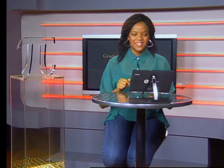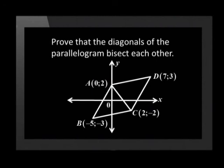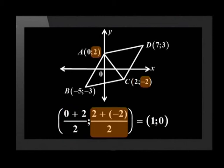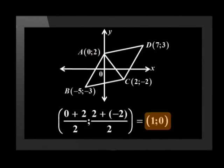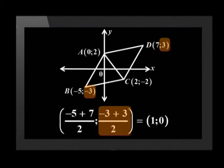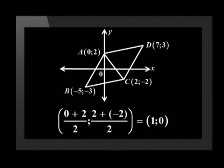Let's do the final question together: prove that the diagonals of the parallelogram bisect each other. Remember that bisect means to divide in half. To prove this, we need to show that the midpoint of each diagonal is the same point. The midpoint of AC equals (0 plus 2)/2 and (2 plus negative 2)/2, which gives (1, 0). The midpoint of BD equals (negative 5 plus 7)/2 and (negative 3 plus 3)/2, which also gives (1, 0). The midpoint of AC is the same as the midpoint of BD, therefore the diagonals bisect each other.